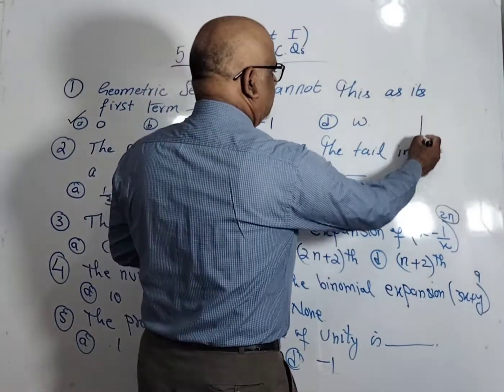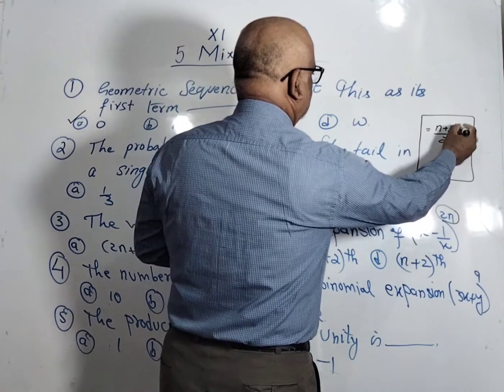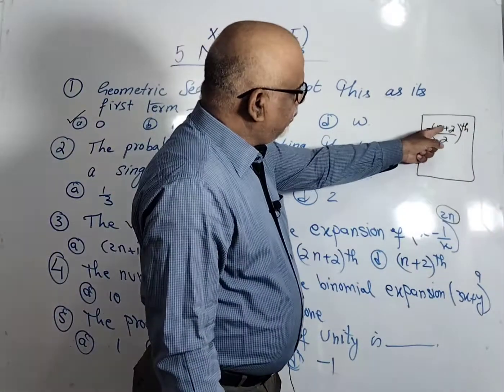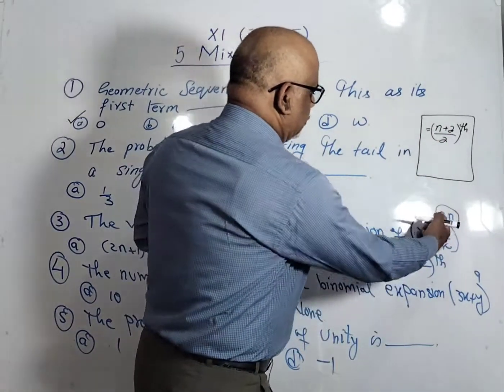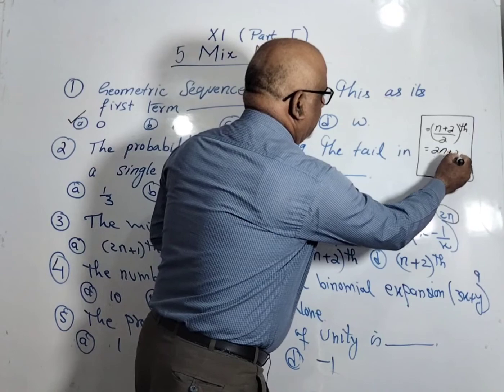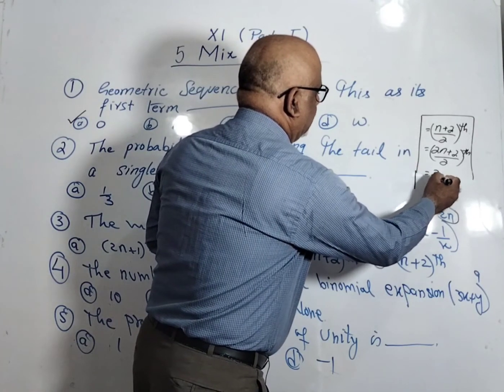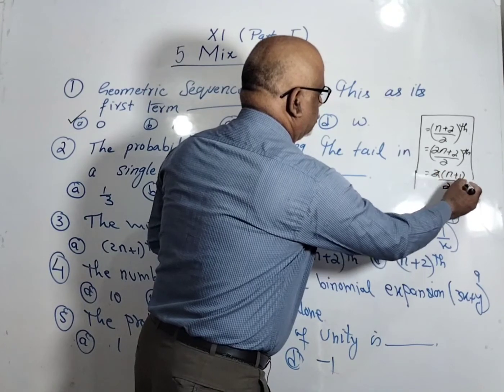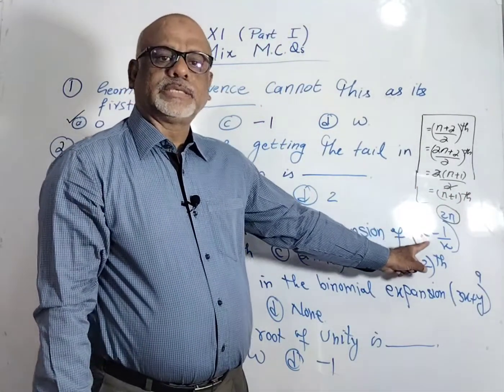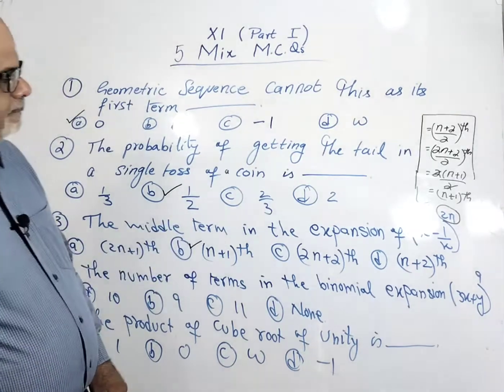Here 2n is an even number. So for even number, we have a middle term: it is (n plus 2) over 2th term. When n is even, then the middle term will be (n plus 2) over 2th term of the binomial expansion. So here 2n, the value of n is 2n. So this is (2n plus 2) divided by 2. Just take out the 2 common here. So this is (n plus 1). 2, 2 cancel. So here the middle term is (n plus 1)th term is the middle term of the expansion (x minus 1 upon x) power 2n. So the B option is correct here.